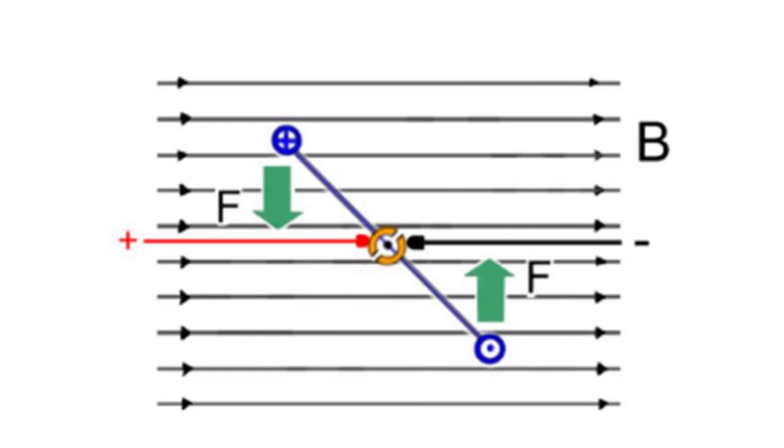The force directions on the sides of the loop also reverse, so that the torque on the loop is in the same direction as in the first diagram, and the loop continues to rotate in the same direction, anti-clockwise in this example.